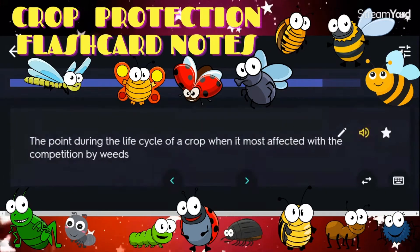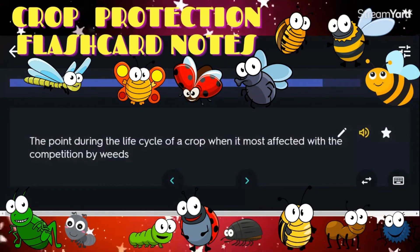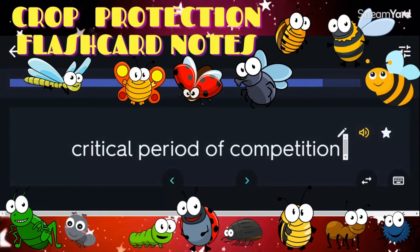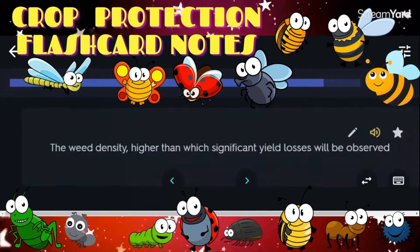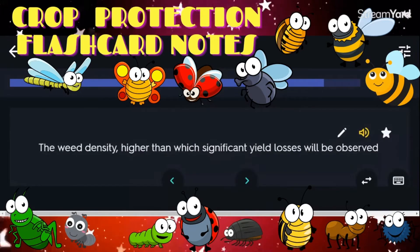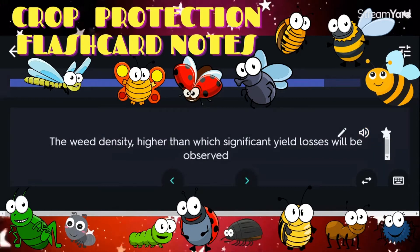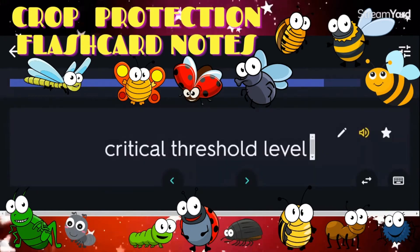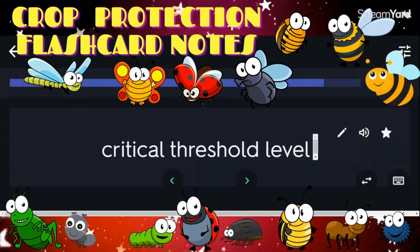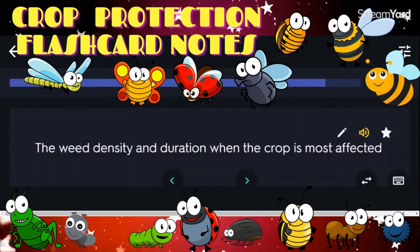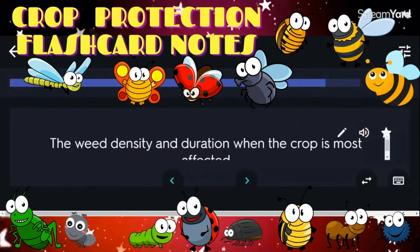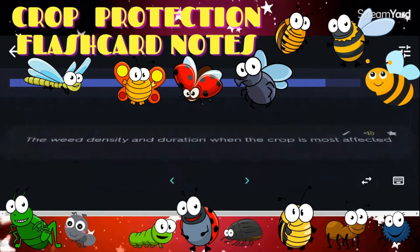The point during the life cycle of a crop when it is most affected by competition from weeds: critical period of competition. The weed density above which significant yield losses will be observed: critical threshold level. The weed density and duration when the crop is most affected: crop weed competitive threshold.